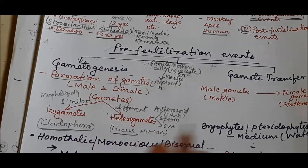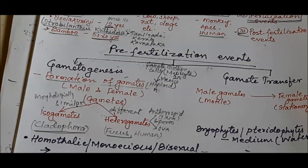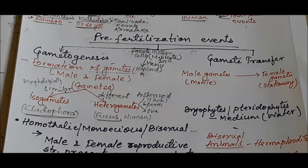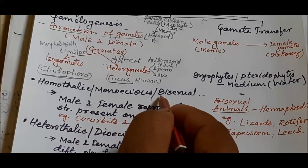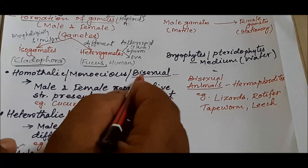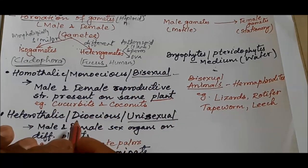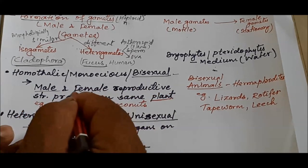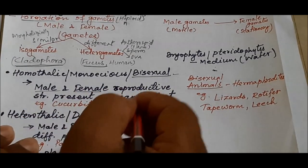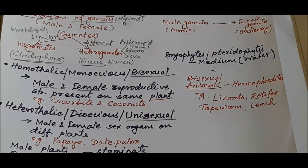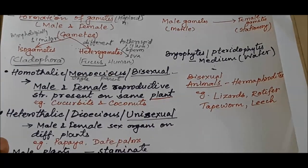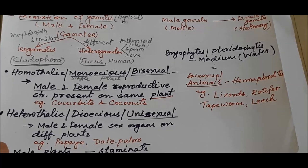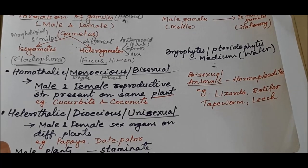On the basis of sexuality, organisms can be categorized into two groups: bisexual and unisexual. Bisexual means both male and female sex organs are present on the same plant or animal body. Bisexual is also called monoecious — mono meaning single — where a single individual has both sex organs and can produce both gametes. Examples include cucurbits and coconuts, which are monoecious plants.